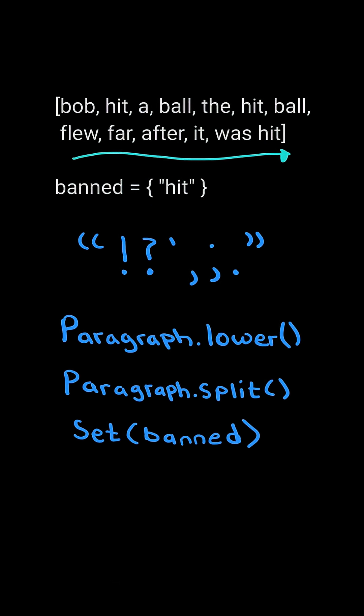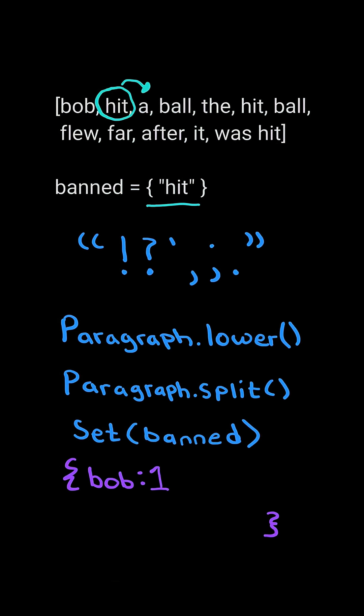We then iterate through the list. If the word is not in the banned list, we add it to our frequency dictionary. If the word is in the banned list, we skip it, and we return the most frequent word.